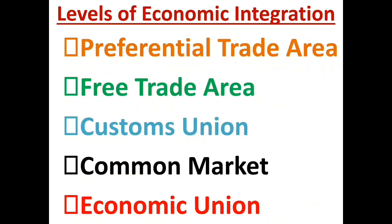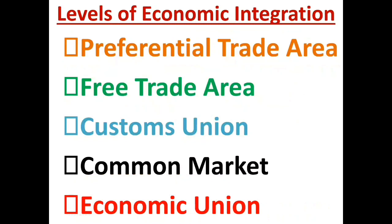We will begin from the first form, which is the preferential trade area, where member countries reduce or eliminate tariff barriers on certain selected products imported from member countries. It is a small step where tariffs are reduced only for certain products. It is a loose form of integration, but the preferential trade area ended with the formulation of the GATT rules in the year 1944.